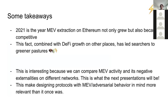What I want you to take away from this presentation: 2021 is the year MEV extraction on Ethereum not only grew — Ethereum is still about 73% of it for the last five months — but also became competitive. Combined with DeFi growth in other places, this has led MEV searchers to much greener pastures. We can now compare MEV activity and negative externalities across different networks — Polygon, BSC, Avalanche, and chains not mentioned like Solana and Terra, which also have 10 or 15 billion TVL and surely have inefficiencies in their systems.